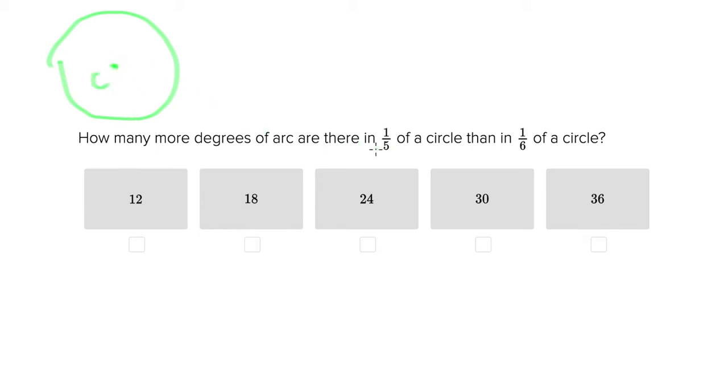And then we're told that we're looking for the difference between one-fifth of a circle. So let's say that this area here is one-fifth the area of a circle and one-sixth of the circle. So now I'm going to do a dotted line and say that this area here is one-sixth of a circle.